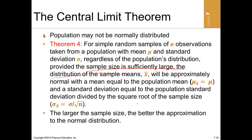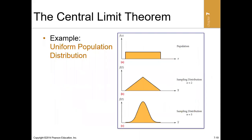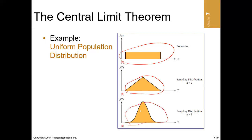For example, starting from a non-normal population: with a sample size of two, the histogram looks non-normal; with a sample size of five, it starts coming closer to normal; and the higher the sample size, the more the sampling distribution looks normally distributed. That is the central limit theorem.